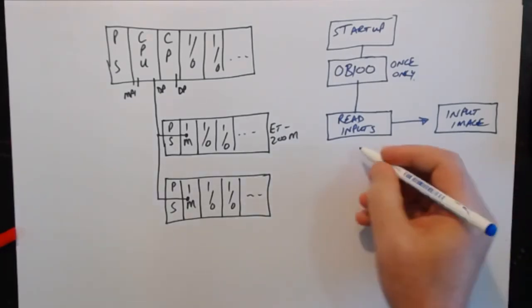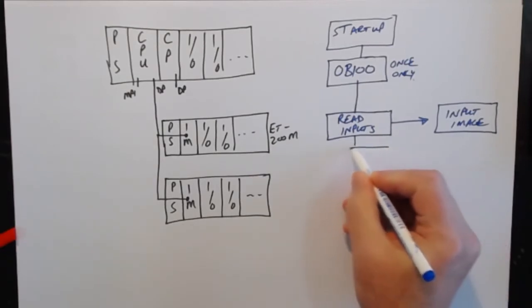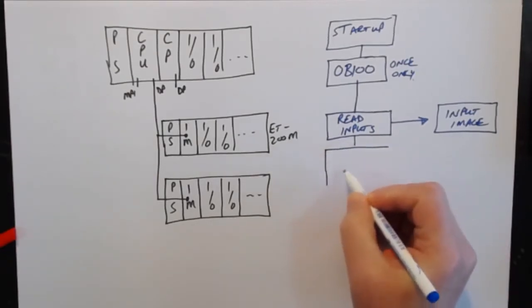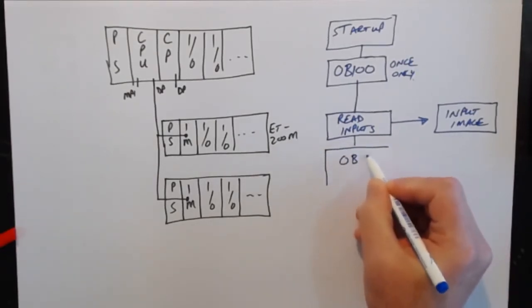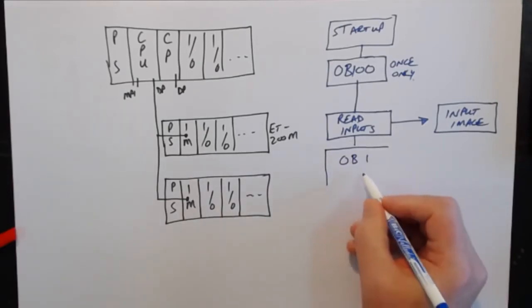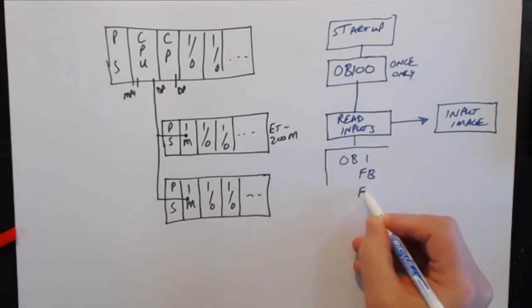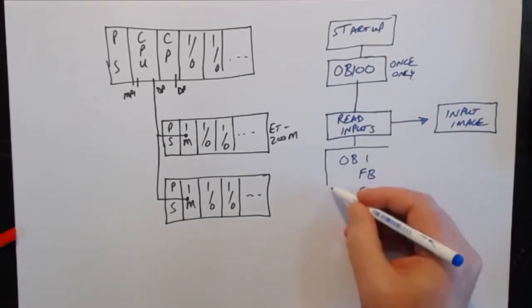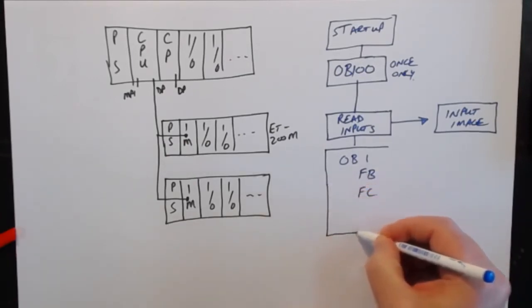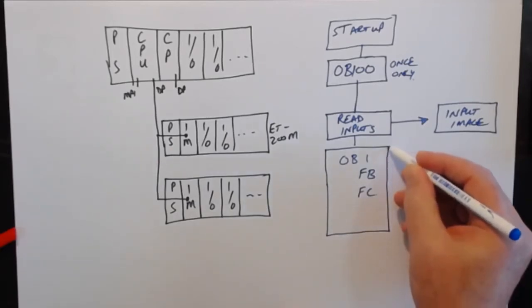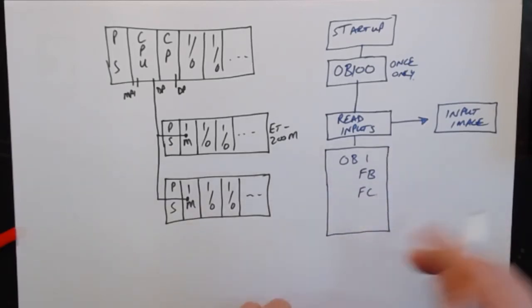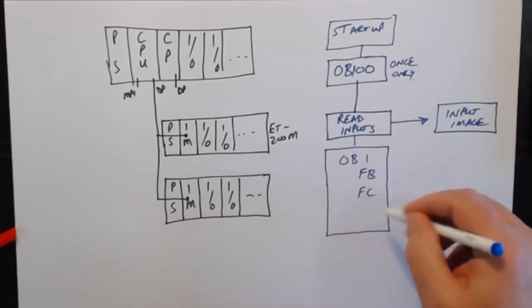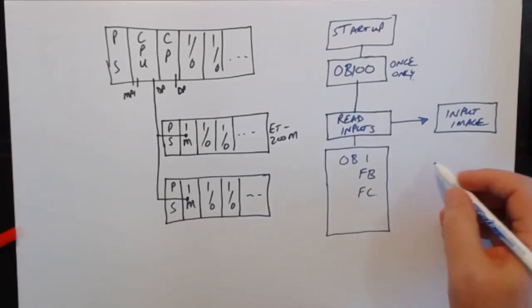Then, once it's read the inputs, it then runs into OB1. And OB1 will then run the main program, which will include function blocks, function control blocks, and so on. There will be several of these and several calls to them. OB1 will, on all these function blocks, then operate on the program state.